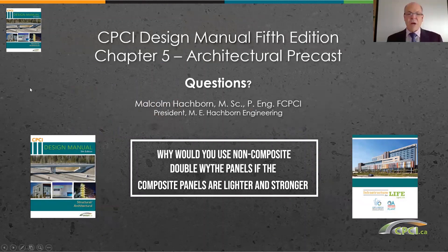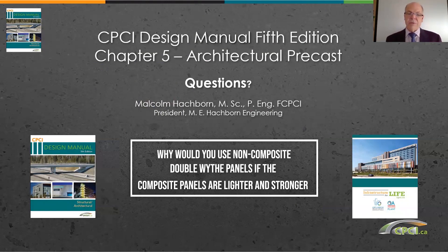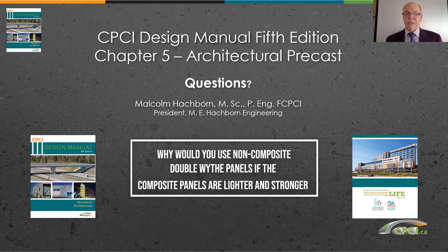Question: Why would you use non-composite double wythe panels if the composite panels are lighter and stronger? One of the big concerns with composite panels is thermal bowing. If you have panels that come up to a corner, you have bowing in two directions normal to one another, and the sealant within that joint will be working against itself in both directions.